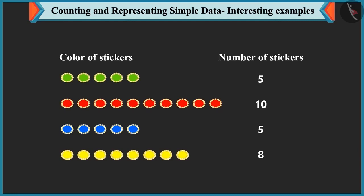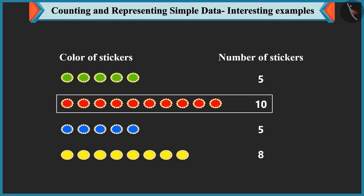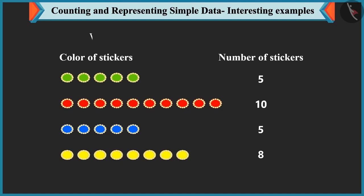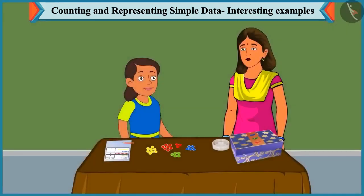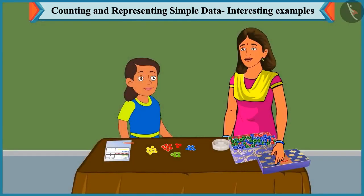Mummy asks which color stickers are the same in number. Bubbly replies: green stickers and blue stickers both have 5, so green and blue color stickers are the same in number. Well done! Mummy then asks Bubbly to count her favorite candies and tell the number of each candy.